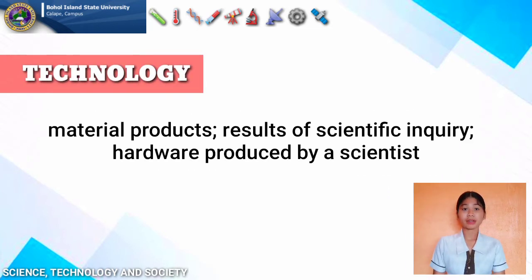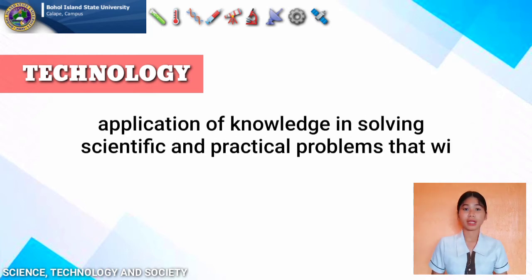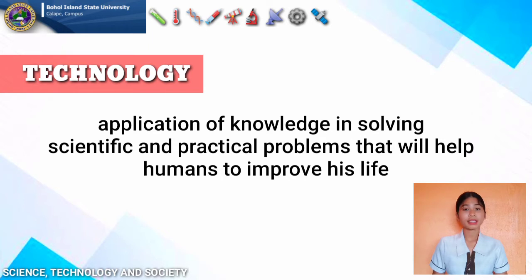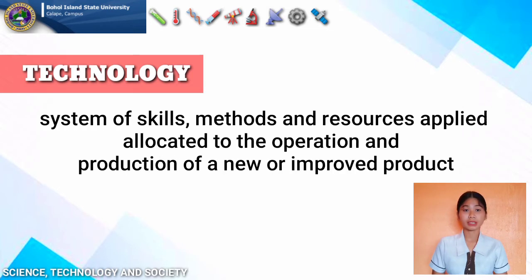Now, what is technology? Technology refers to the material products that are the results of scientific inquiry — we can say this is the hardware produced by scientists or inventors. These are collections of methods, techniques, and processes used in the production of goods and services. This is where the application of knowledge happens, solving scientific and practical problems that help humans in their everyday living. It is also the complex system of knowledge, skills, methods, and resources applied toward the development and production of new or improved products.